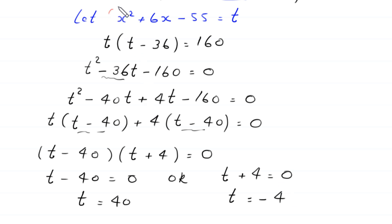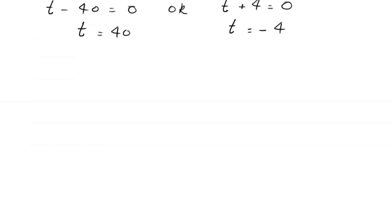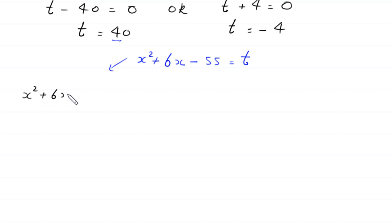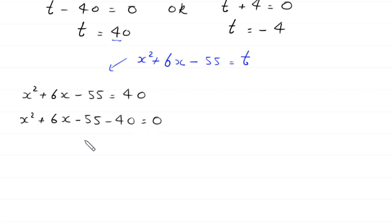Now, recall that we supposed x squared plus 6x minus 55 is equal to t. When t is equal to 40, this equation becomes x squared plus 6x minus 55 is equal to 40. Moving 40 to the left hand side gives x squared plus 6x minus 95 is equal to 0. This quadratic equation is not factorable, so we solve it by the quadratic formula.